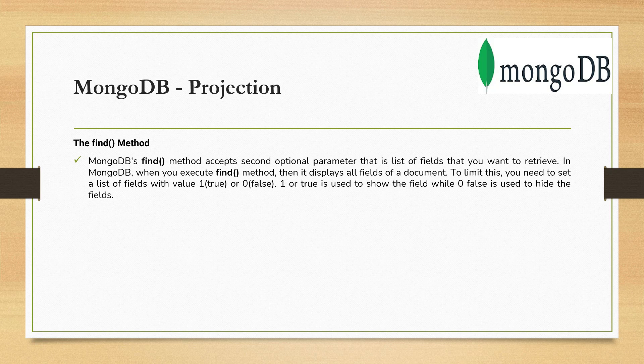The find method accepts a second optional parameter, which is nothing but the list of fields you want to retrieve or select. When you execute the find method, it displays all the fields of a document. To limit this, you need to set the list of fields with either value 1 or true, or 0 or false. Value 1 or true means you want to select that field; value 0 or false means you want to hide that field.